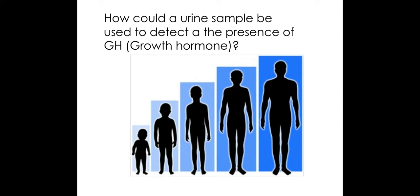This is an example of another type of hormone that they might ask you to detect, but it's the same principle — using immobilized antibodies and excess antibodies to form a, in this case, GH-antibody complex.